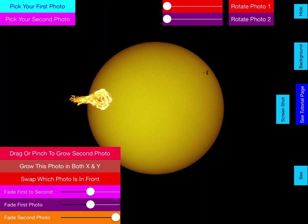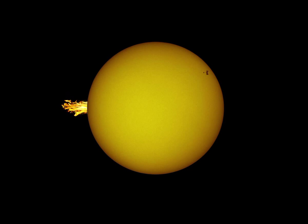Now if we select which photo is in front and change it, we'll put the fireball in the back. Now it looks more like some type of solar flare.